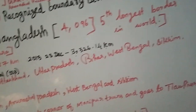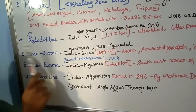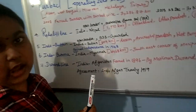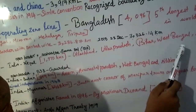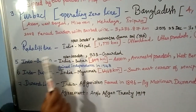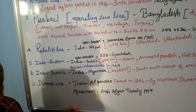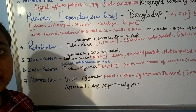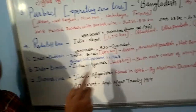Now let's read about the open border line between India and Nepal. That is 1,770 km and shares the states of Uttarakhand, Uttar Pradesh, Bihar, West Bengal and Sikkim. This is an open border country, guarded by the Sashastra Seema Bal, known as SSB. All open border countries are guarded by SSB, which is an important police and army force dedicated to open border countries.